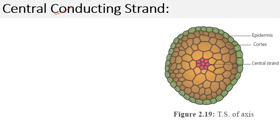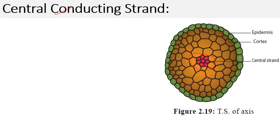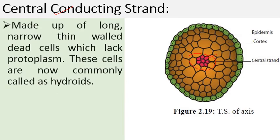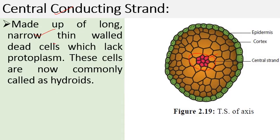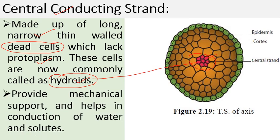Next comes the innermost central conducting strand. This portion is commonly known as hydroids, analogous to xylem tracheids, which have thick-walled cells with a main function in conduction. Hydroids are made up of long, narrow, thin-walled dead cells which lack protoplasm. Their main functions are to provide mechanical support to the plant body and also help in conduction of water and solutes — similar to the function of xylem tracheids.